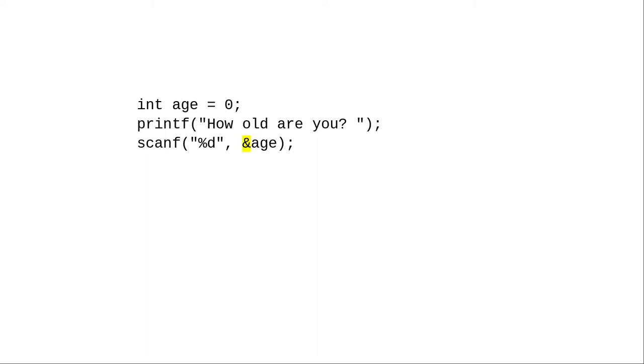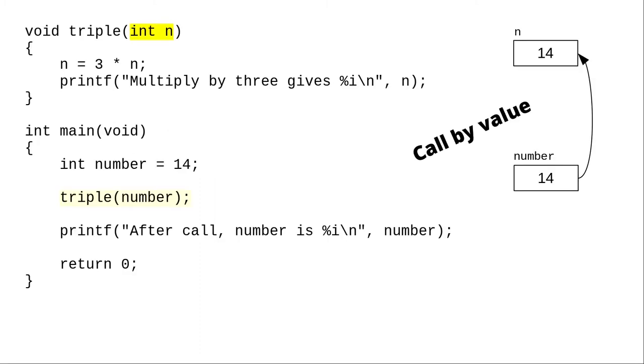In later chapters, you'll find out how to do this trick in your own functions. But for now, remember that C uses call by value. Parameters always receive a copy of the argument's value.